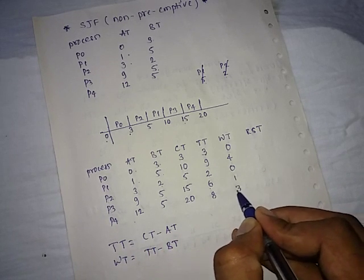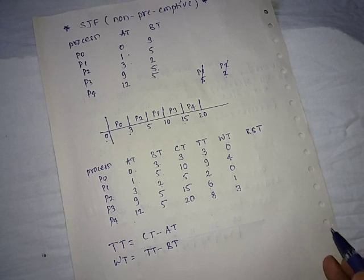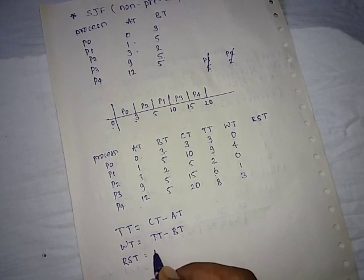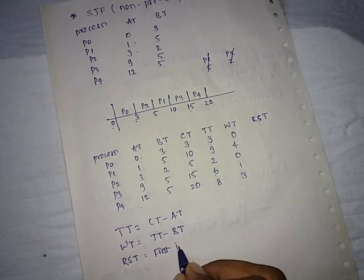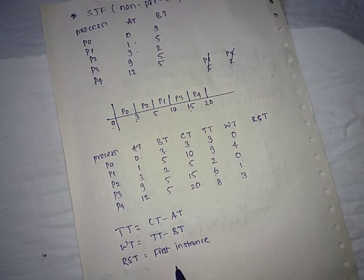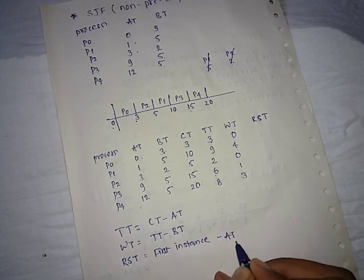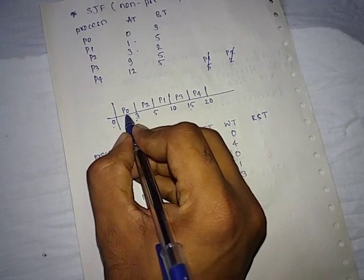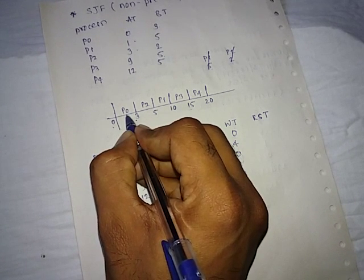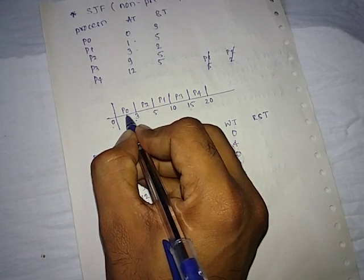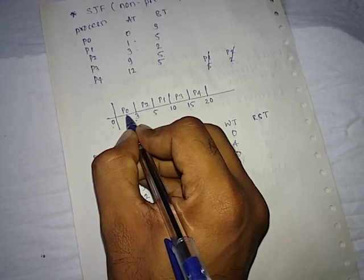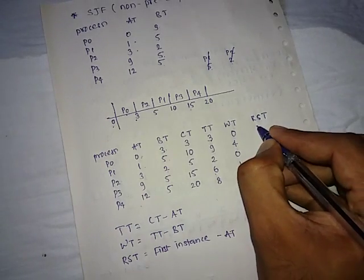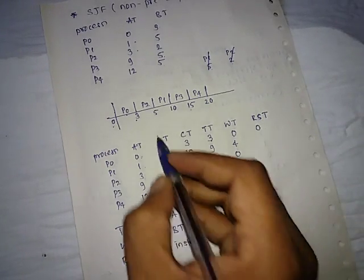Next is response time - first instance of particular process minus arrival time of that particular process. So here response time of P0 process, the first instance of P0, that is CPU allocated to P0 process at 0 minus its arrival time. So 0 minus 0 becomes 0.